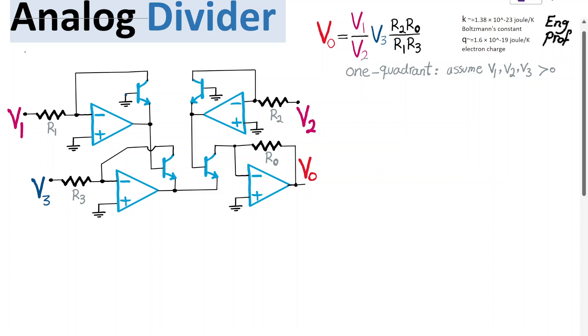A one-quadrant analog divider is implemented in this circuit using four ideal op-amps and four BJT or bipolar junction transistors. We want to show that the output voltage in this circuit is related to V1, V2, V3, and therefore with a proper selection of voltages, we can effectively realize an analog divider.